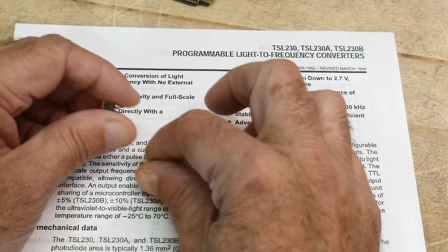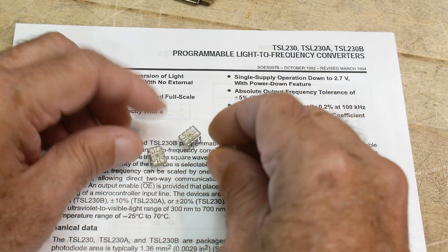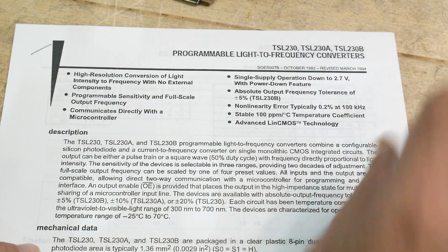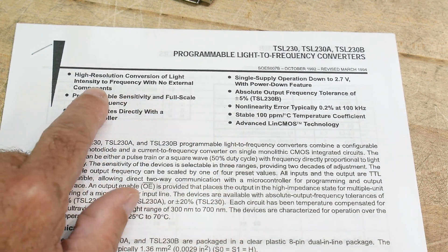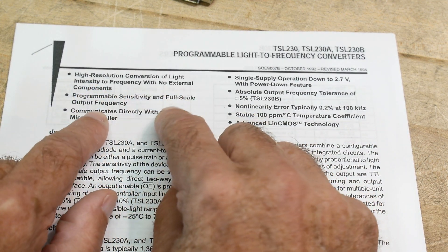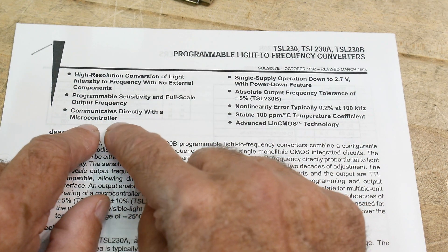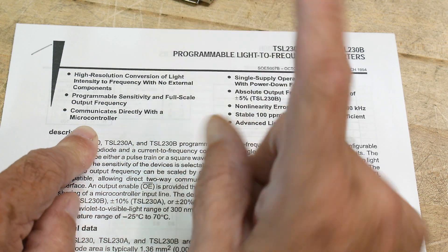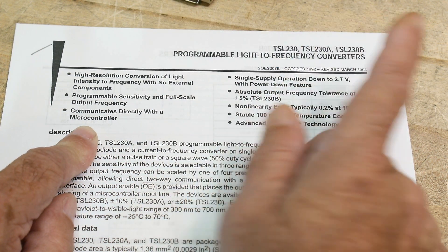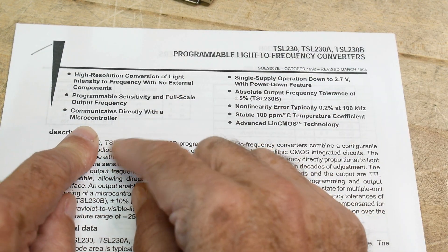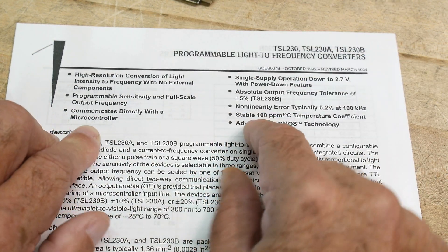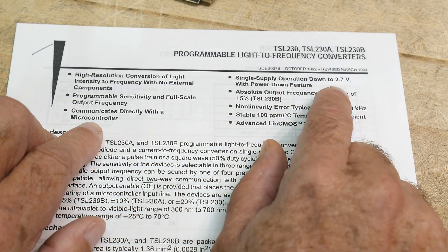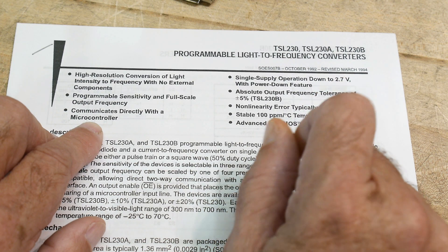They are high resolution programmable. I'll talk about the programmability. It communicates directly with a microcontroller, which basically means it's a five volt part and you can send in the frequency to the microcontroller and it has to measure the frequency. There's no communication really. It can operate down to 2.7 volts, that's pretty cool.